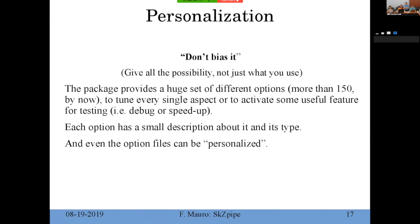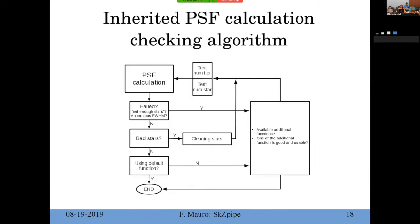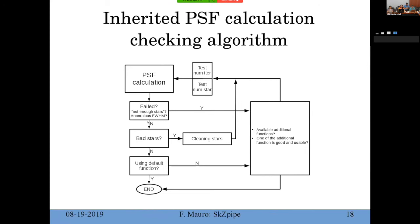There are more than 150 options — actually 161 now — so you can set most things. There are also options for speed: you can skip things or run DAOmaster once instead of multiple times depending on the speed-up level. There is also a setting to avoid situations where all-star fitting gets stuck — you set a maximum time, the package kills the process and continues, inheriting the previous calculation. Plus a PSF check that verifies if the configuration failed.